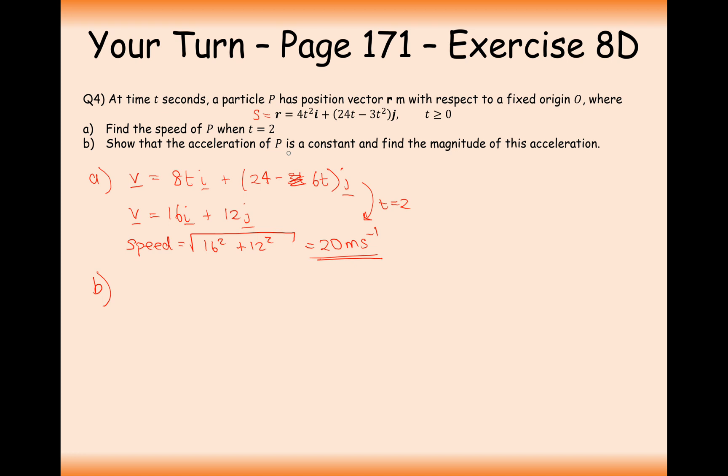Part b here is show that the acceleration of p is a constant, and find the magnitude of this acceleration. So differentiating again to get a, and it's going to be 8i minus 6j, and this is a constant. There are no t's in our acceleration here. So because this vector is not in terms of t, what that means is it doesn't have t in the equation. So the acceleration is constant. And now we want to find the magnitude of this value here. So it's going to be the square root of 8 squared plus 6 squared. And it's going to equal 10. 10 meters per second squared.